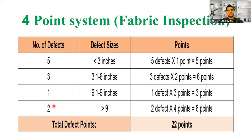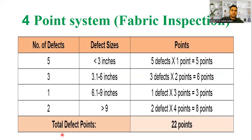For example, with two defects of sizes scoring 2 and 2 points: 2 into 4 gives 8 points. Adding up all defects — 5, 6, 3 — we get 8 points, and the total comes to 22 points.